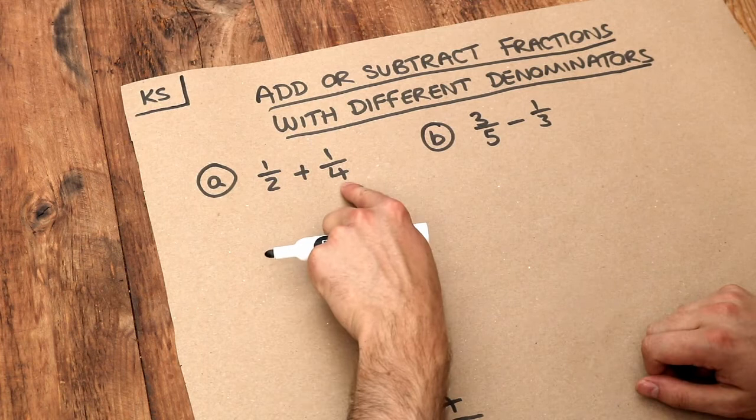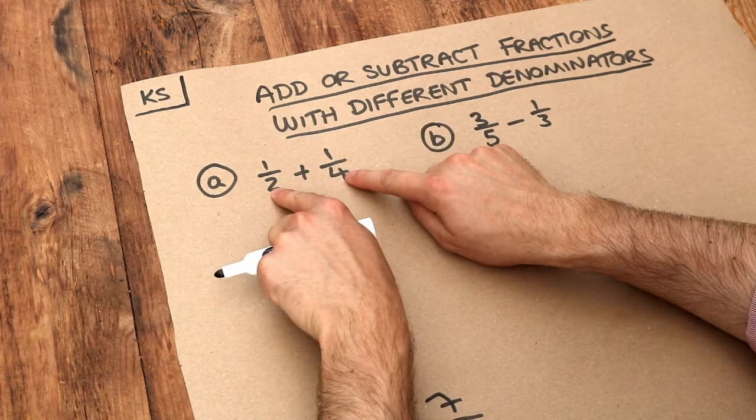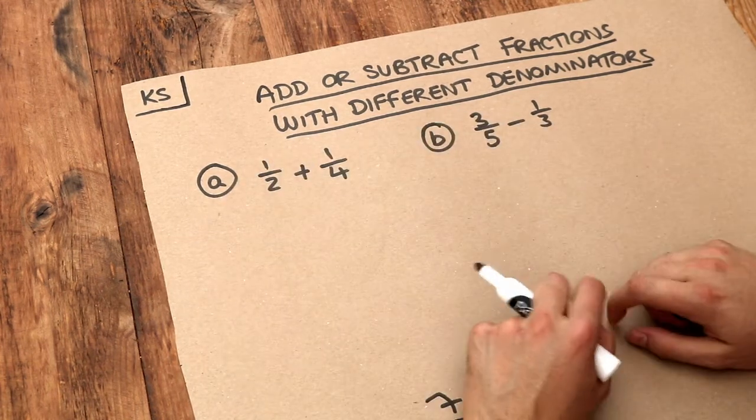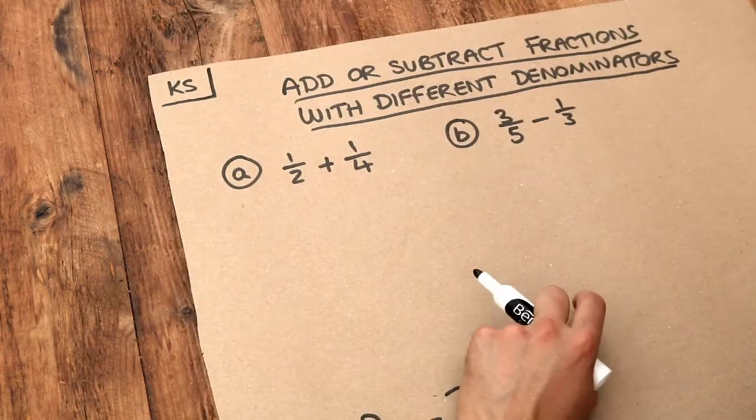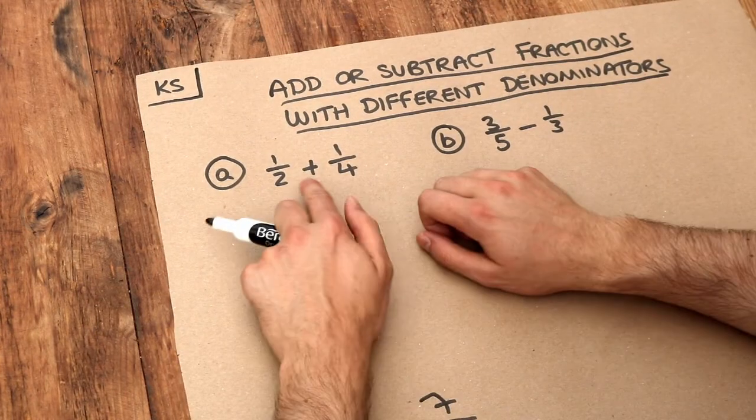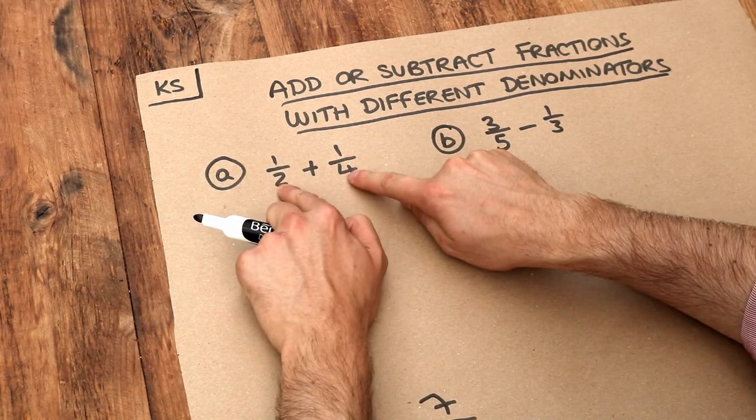But here we've got 1/2 and 1/4, they're not the same denominator so we can't just add these numbers. If the denominators were the same then we could add the numerators. So what we need to do is to change these denominators so they're both the same.